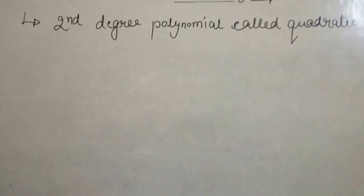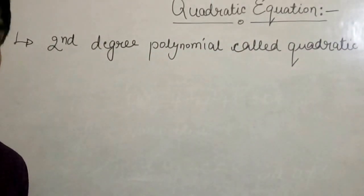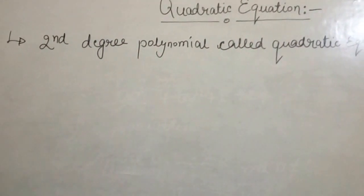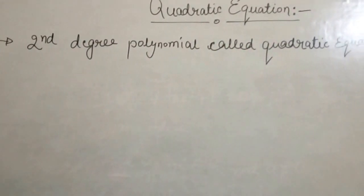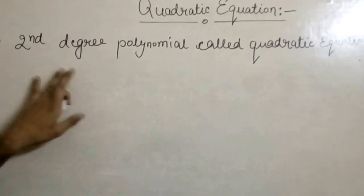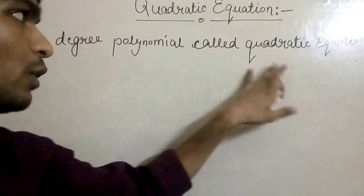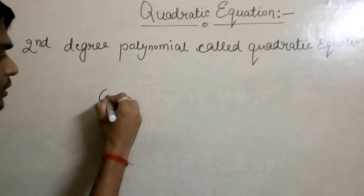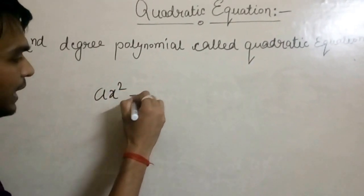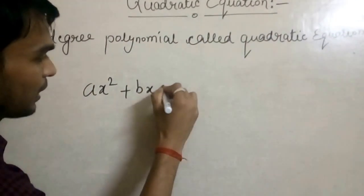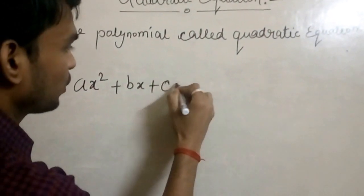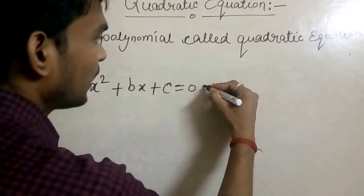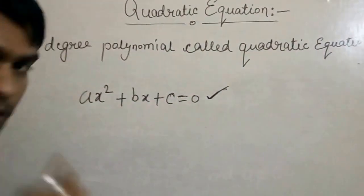Today I am going to discuss quadratic equations. First of all, we have to know what a quadratic equation is. A second degree polynomial is called a quadratic equation, and a second degree polynomial equation has the form ax² + bx + c = 0. This is the second degree quadratic equation.